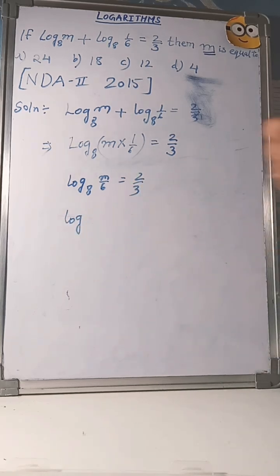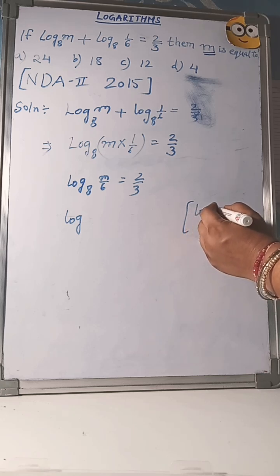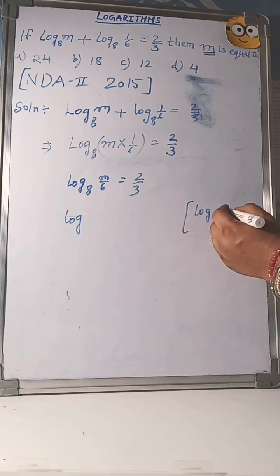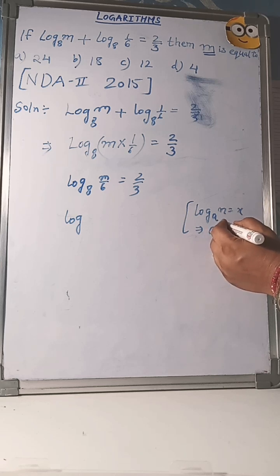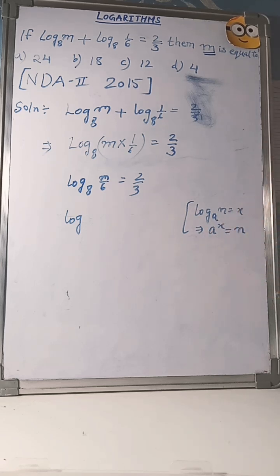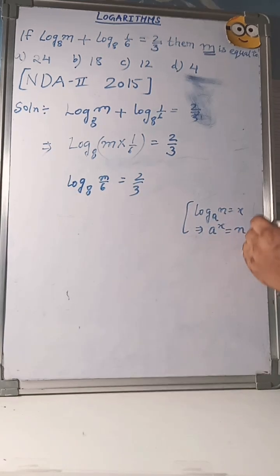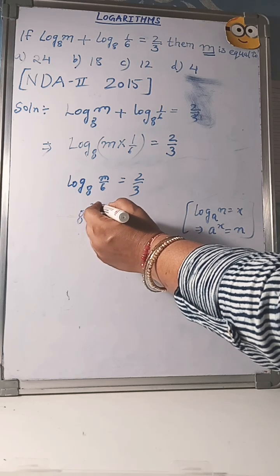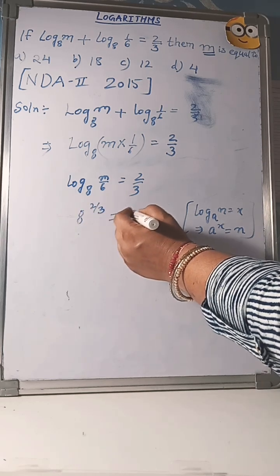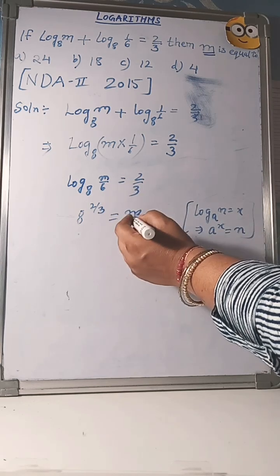Now using one more property of logarithms: log base a of n equals x, you can write this as a to the power x equals n. Using this property, you can change this to 8 to the power 2/3 equals m/6.